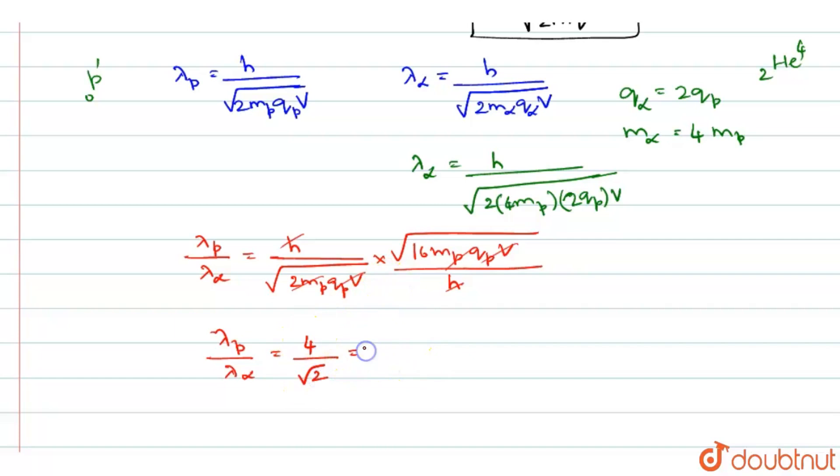So 4 divided by root 2, you can write it as 2 root 2. So lambda p by lambda alpha will be equal to 2 root 2.